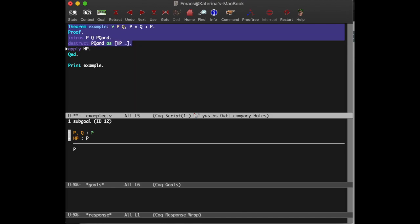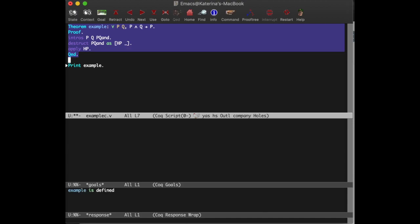Then we use the destruct tactic on the hypothesis that p and q holds, because we hypothesis that if p and q is true, then p and q must be true individually. We'll call the hypothesis that p holds HP, and the hypothesis that q holds, actually we can throw that one away, we won't need it. Then we apply hypothesis HP to our goal, finishing our proof.